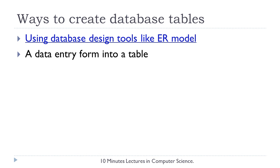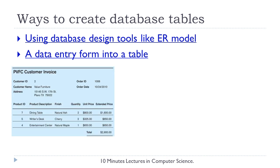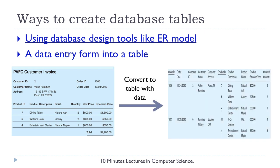Or in the second case we can take the data entry form. In this example, the invoice with data can be converted into a table with data like this. In both cases the resultant table needs to be normalized. In the first case the tables created will be in first normal form, but in the second case we may need to apply the rules to convert them into first normal form.